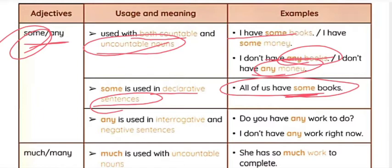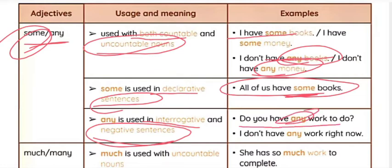Any is used in interrogative and negative sentences. For example: 'Do you have any book?' — used in an interrogative sentence, asking a question. 'I don't have any book right now' — a negative sentence. So we use 'any' in interrogative and negative sentences, while 'some' is used in declarative sentences.